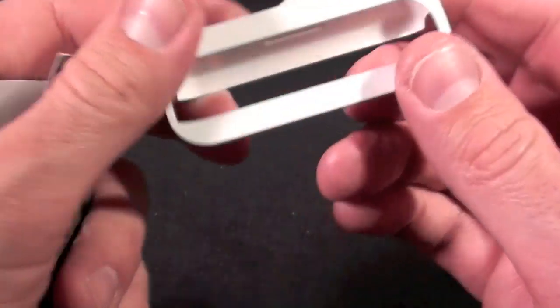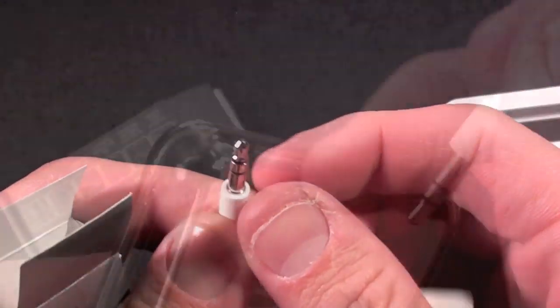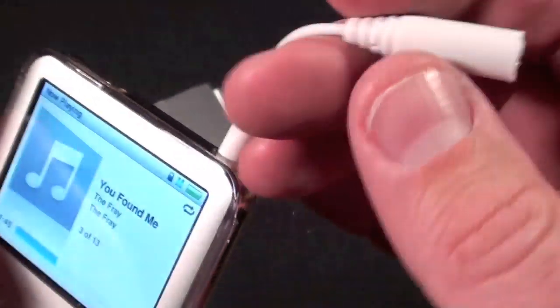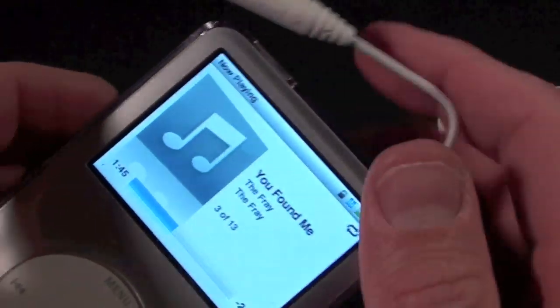So inside the box we have the dock adapter which fits the case. We have the 3.5 millimeter headset jack adapter. You may need this if your headset jack didn't fit with this case. So far all of the headsets I use fit just fine without this.